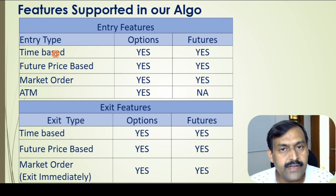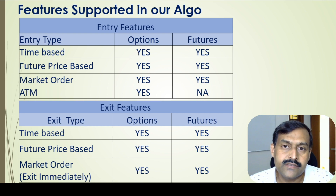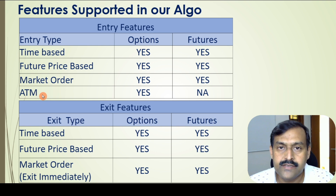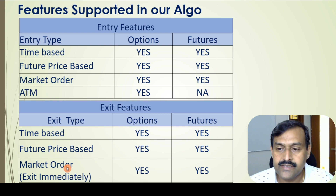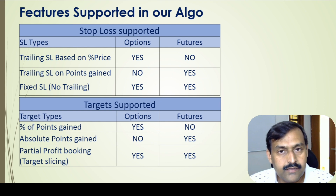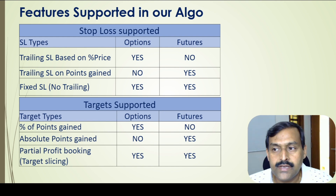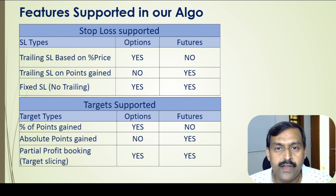Here are the entry and exit rules we have implemented. We can specify the time at which to start the strategy for both options and futures, and also the future price at which the strategy can be triggered. Market order is supported as well as the ATM entry — when we say a strategy is ATM, it automatically calculates the ATM strikes and initiates the option selling strategies. For exit, we can exit at a specified time or at a particular future price. The moment a strategy gets triggered, the stop loss and all target orders are placed in the system. We set the stop loss for options based on a percentage of the premium sold, and that percentage can be mentioned in the strategy input.